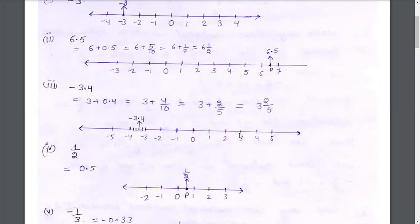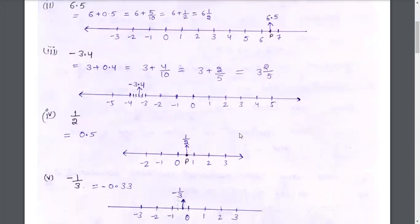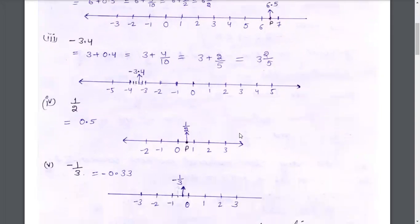6.5 means 5 by 10, which means 6 and 1 by 2, which means 6 and half, which equals 6.5. Next, we have minus 3.4. Minus 3.4 means...